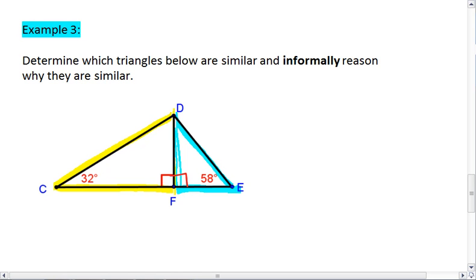Let's fill in our missing angles. If CDF has angle 32 and 90, then this third angle must be 180 minus 90, which is 90 degrees. And then we want to also minus 32, meaning this angle must be 58 degrees.